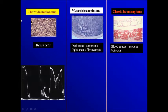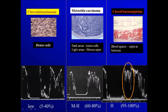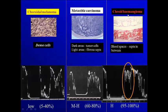For example, choroidal melanoma is formed of dense cells, so the reflectivity of the lesion is low — something between 5% to 40%. In metastatic carcinoma, which is formed of areas of tumor cells and areas of fibrous tissue, the reflectivity is medium to high, between 60% to 80%. In choroidal hemangioma, where we have blood spaces with septa of fibrous tissue in between, the reflectivity is very high, between 95% up to 100%.